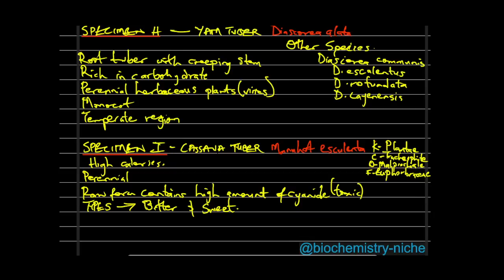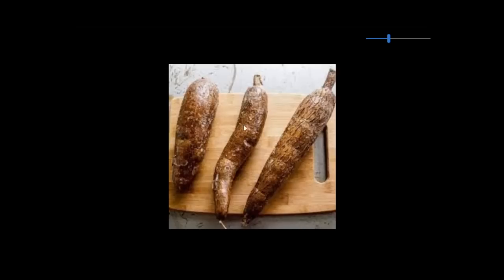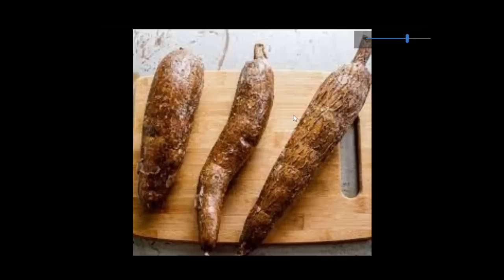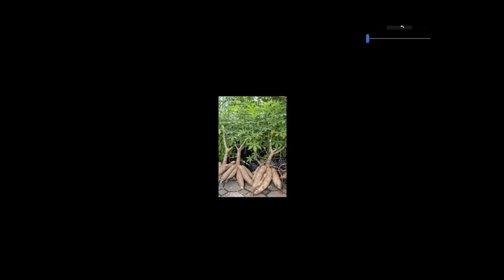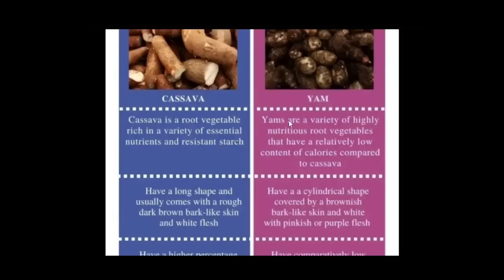You could be asked to give similarities and differences between yam and cassava. Both are root tubers. Cassava is a root vegetable rich in a variety of essential nutrients and resistant starch. Yam is also a nutritious root vegetable but has relatively low calorie content compared to cassava.